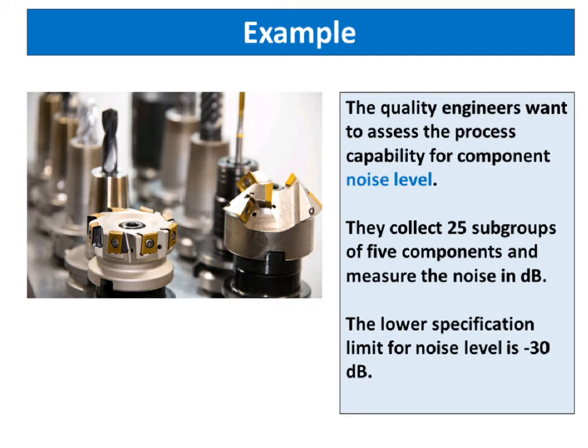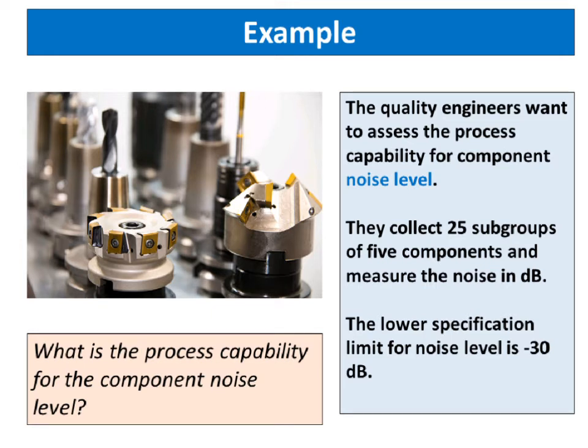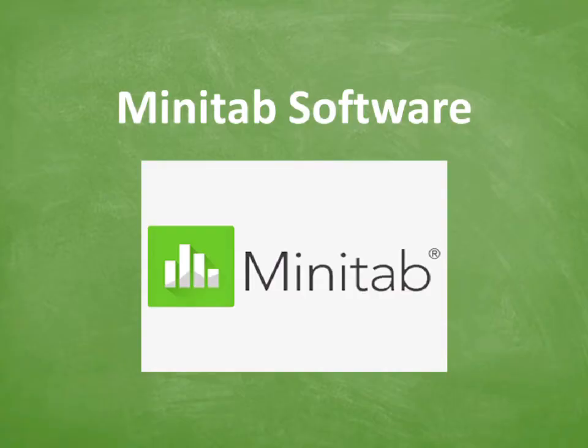The quality engineers want to assess the process capability for component noise level. They collect 25 subgroups of five components and measure the noise in dB. The lower specification limit for noise level is minus 30 dB. What is the process capability for the component noise level? We will use Minitab software to analyze the data.